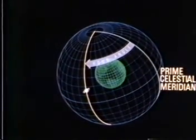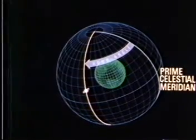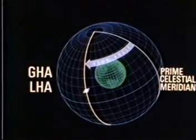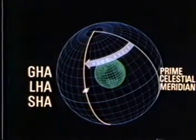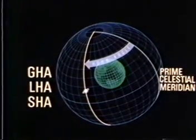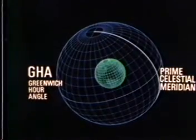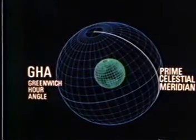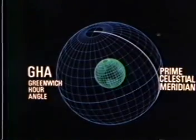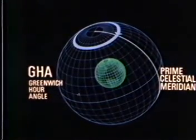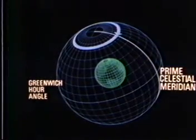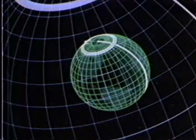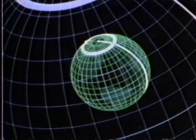In celestial navigation, we use three specific hour angles — Greenwich, local, and sidereal — depending on the origin of the measurement. The first of these, Greenwich hour angle, is comparable to longitude on Earth, except GHA is only measured in a westerly direction through 360 degrees, while longitude is always measured east or west 180 degrees from the Greenwich meridian.